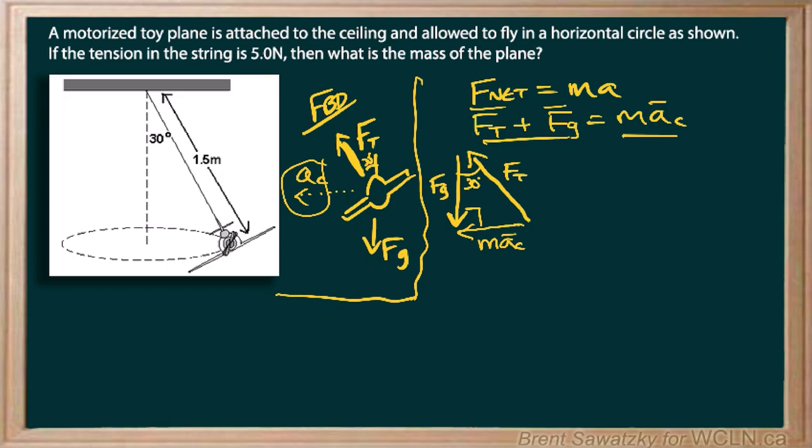So probably if we wanted to figure out, we know what FT is, it's five newtons, and so if we want the mass then just coming up with FG would be a good way to do that. And so FG is equal to FT cos 30.